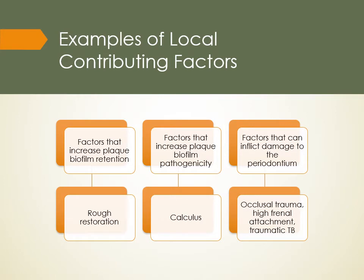Examples of contributing factors include: factors that increase plaque biofilm retention — such as a rough restoration or an overhanging restoration; factors that increase plaque biofilm pathogenicity — calculus serves as a site of attachment and increases the type and damaging potential of bacteria; and factors that can inflict damage to the periodontium, like high occlusal trauma, high frenal attachment, or traumatic toothbrushing. These leave the periodontium in a compromised state, giving the biofilm an advantage.